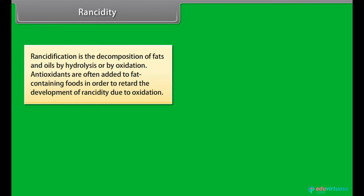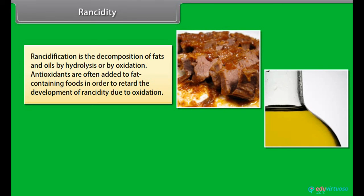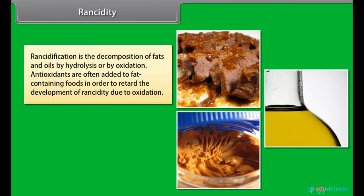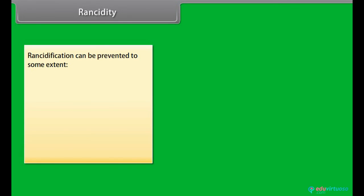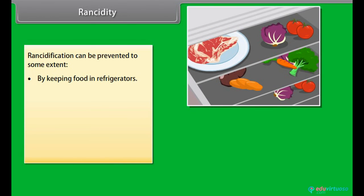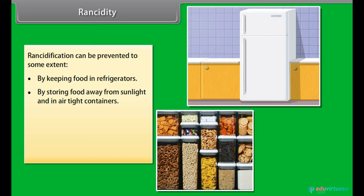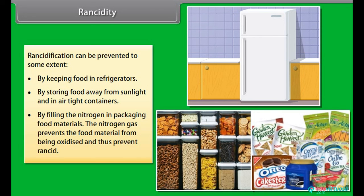Rancidification is the decomposition of fats and oils by hydrolysis or by oxidation. Antioxidants are often added to fat containing foods in order to retard the development of rancidity due to oxidation. Natural antioxidants include polyphenols, ascorbic acid, tocopherols. Synthetic antioxidants are butylated hydroxy anisole and butylated hydroxy toluene. Rancidification can be prevented to some extent by keeping food in refrigerators, by storing food away from sunlight and in airtight containers, by filling nitrogen in packaging food materials. The nitrogen gas prevents the food material from being oxidized and thus prevent rancid.